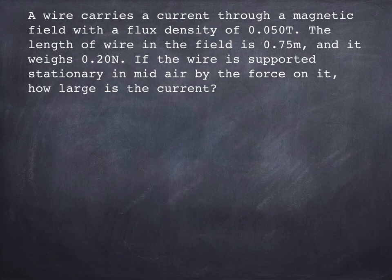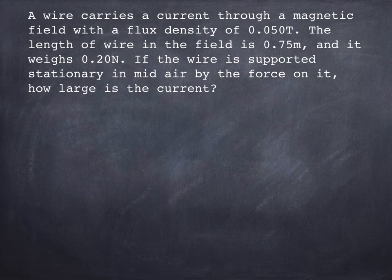So let's look at how you're going to use this equation. Sort of typical question here. Read it through really carefully. You never waste time by reading and double reading a question. A wire carries a current through a magnetic field with a flux density of 0.050 Tesla. That might sound really small, but actually magnetic fields when measured in Tesla are pretty small numbers, so don't be put off by that.